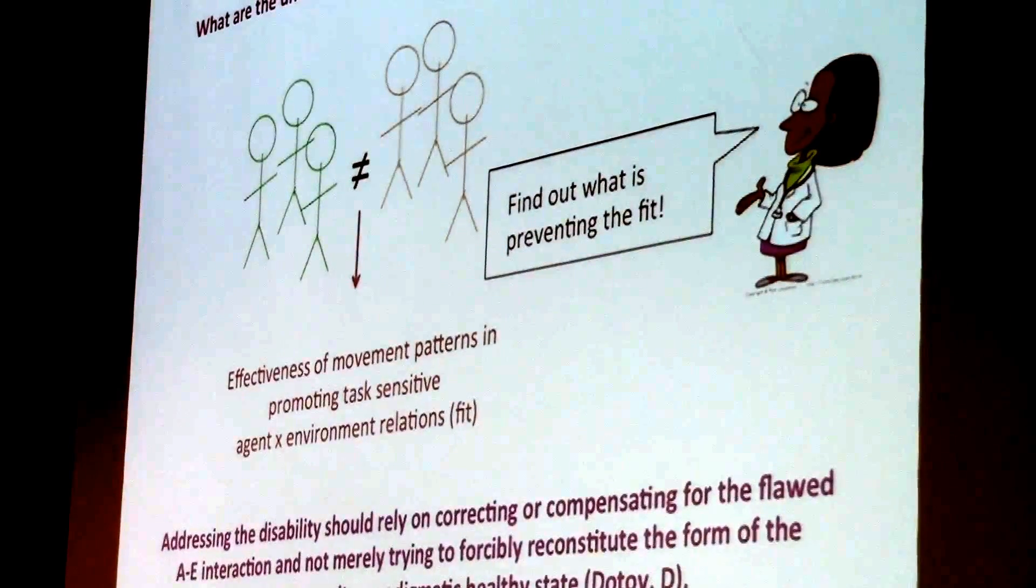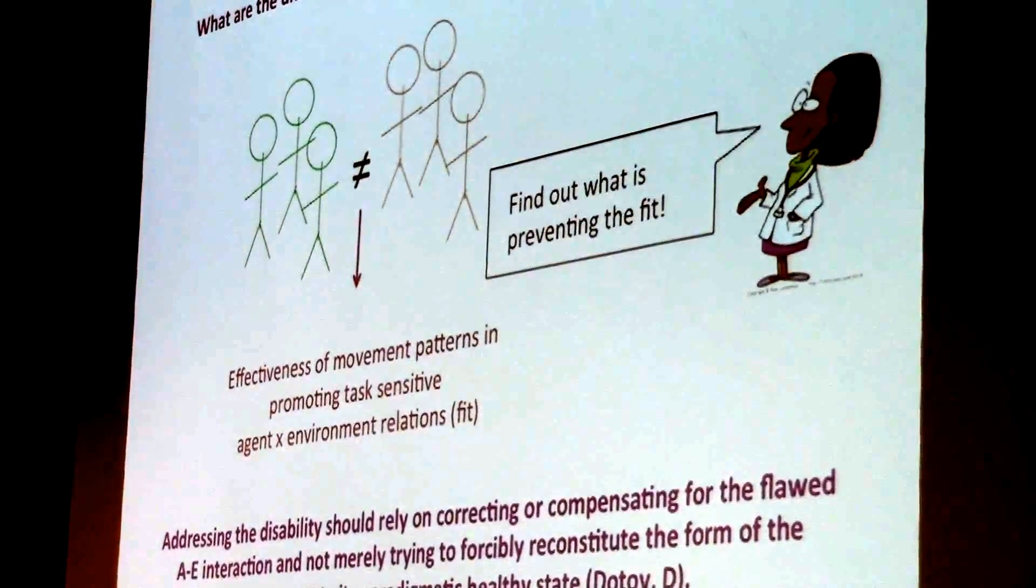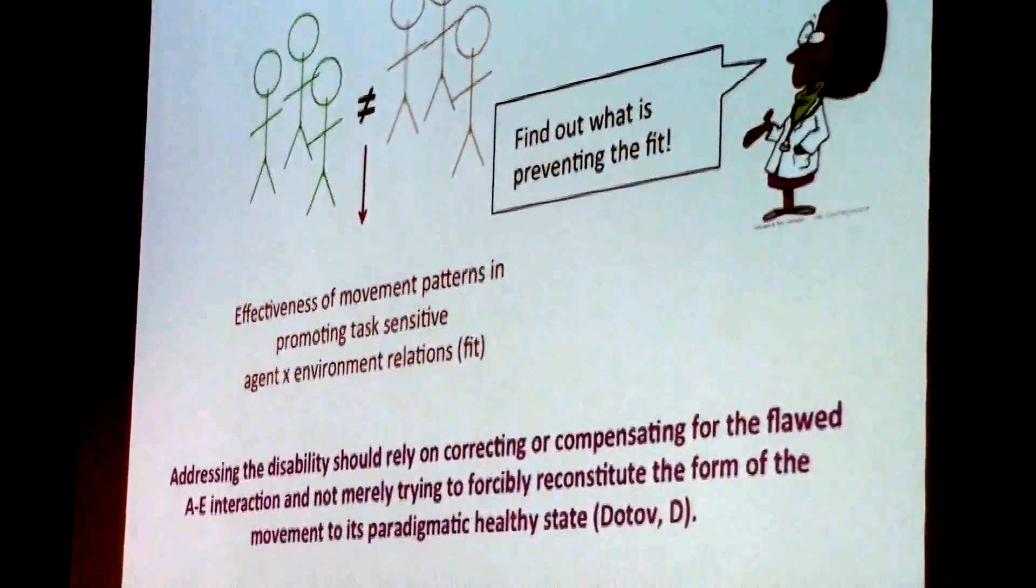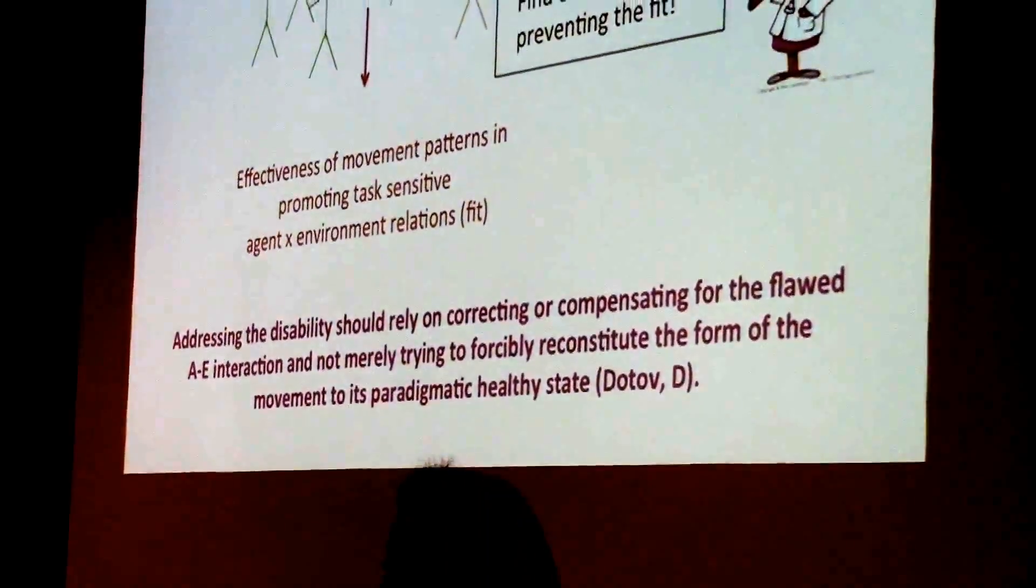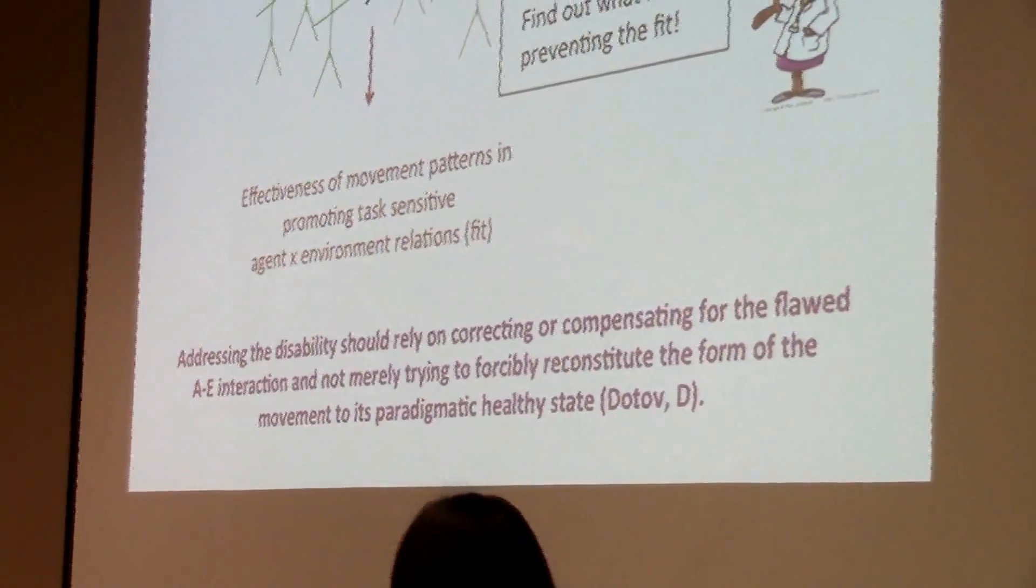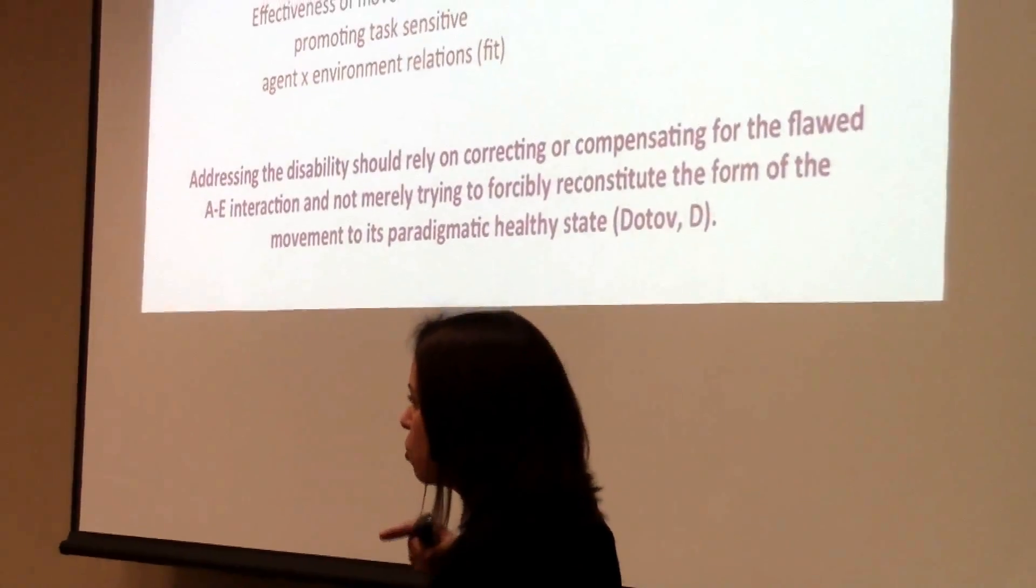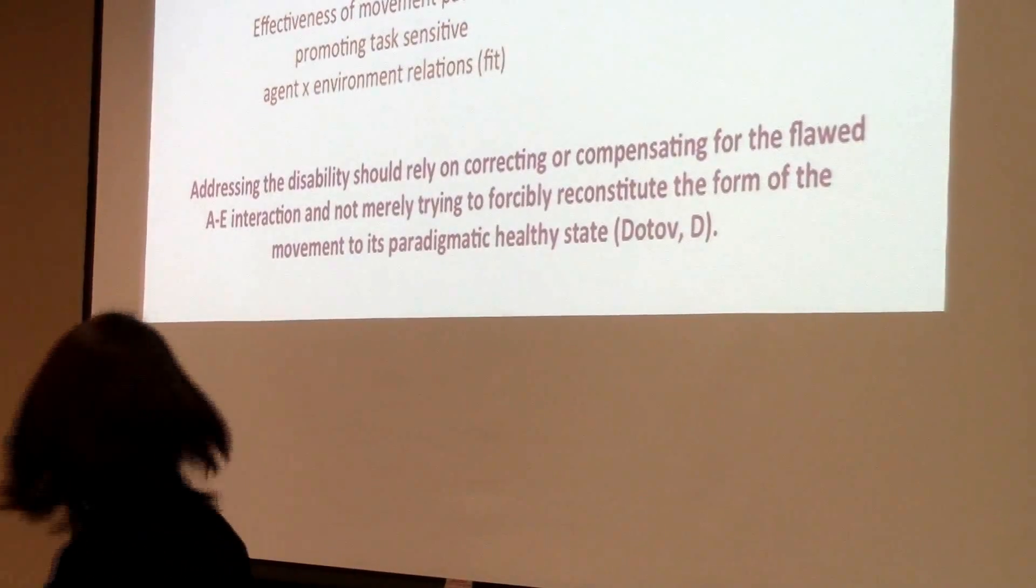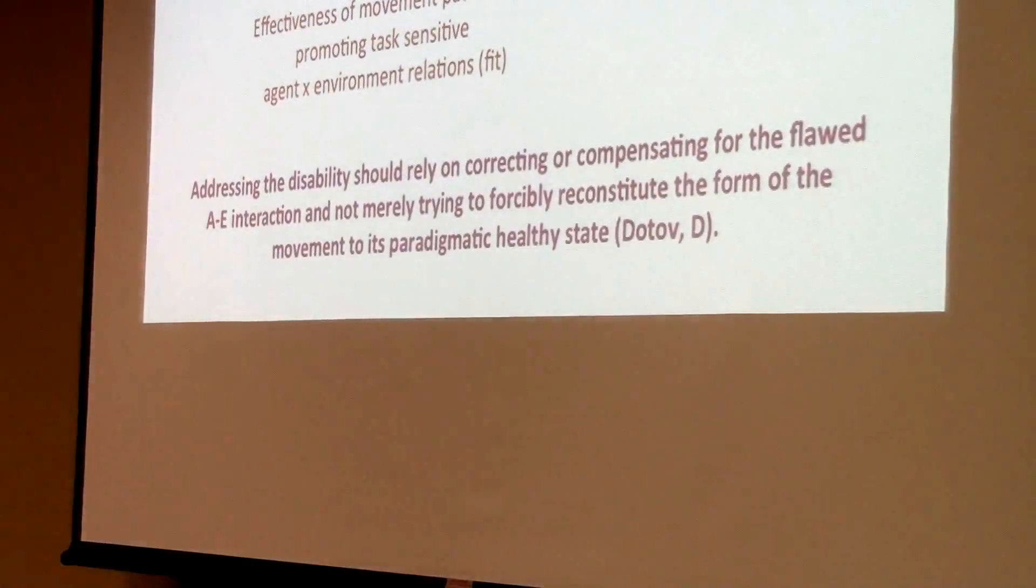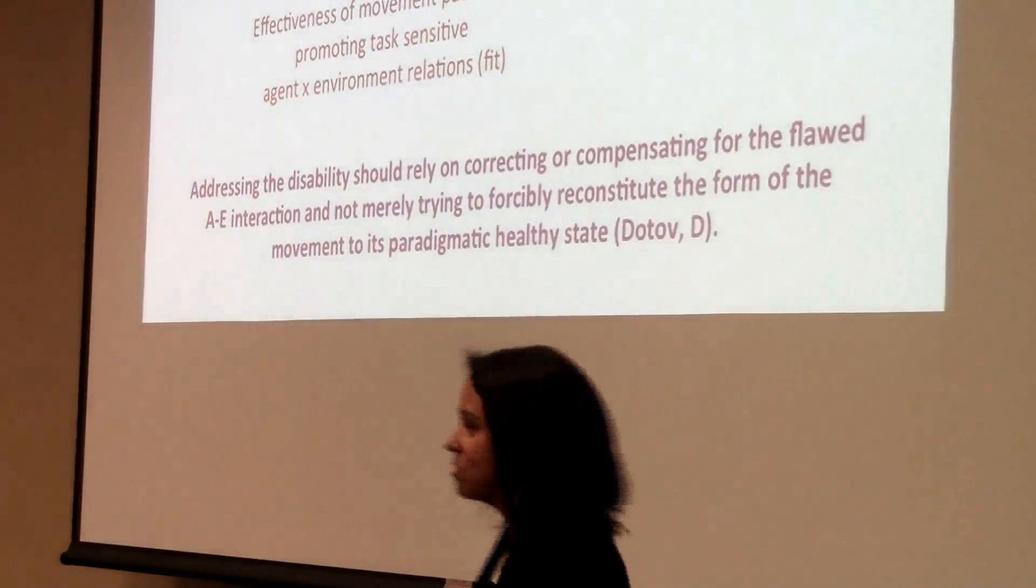And now I'm going to use a quotation from Dotov: Addressing the disability should rely on correcting or compensating for the flawed agent-environment interaction and not merely trying to forcibly reconstitute the form of the movement to its paradigmatic healthy state. And that's actually for Marisa. Oh yeah, it's okay. So Marisa. There you go. I thought you wrote it. Okay.